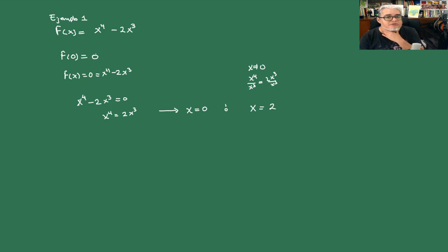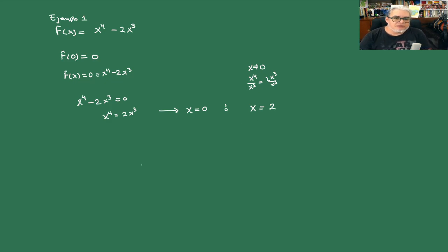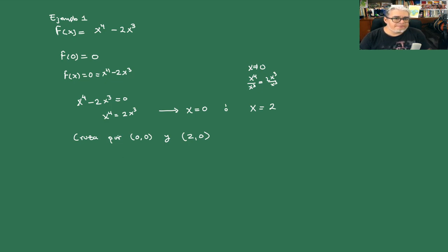Pasa por el (0, 0) y pasa por el (2, 0). Entonces esa ya es información: la función cruza por (0,0) y (2,0).